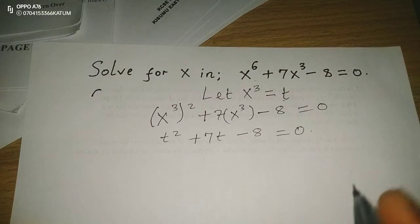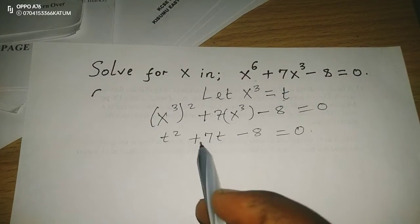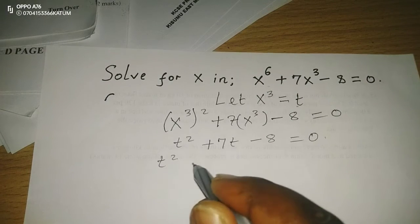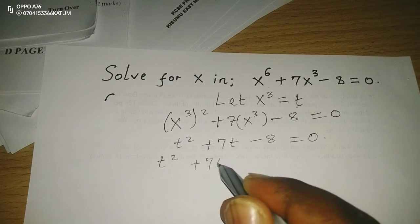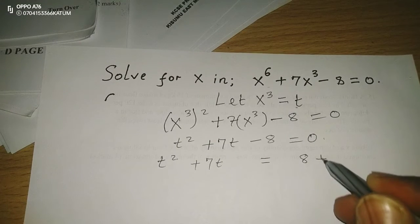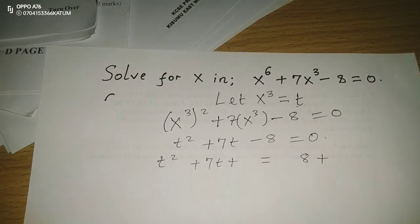So we can solve this one as a quadratic equation whereby t^2 + 7t = 8 becomes positive. But now we can add a constant at both sides,